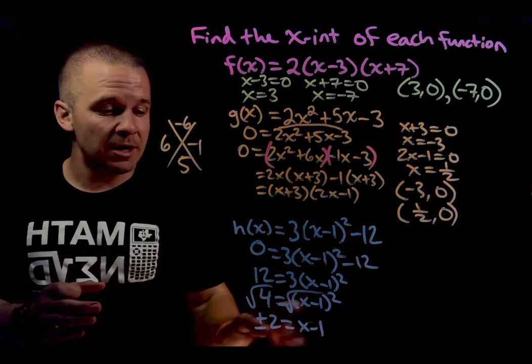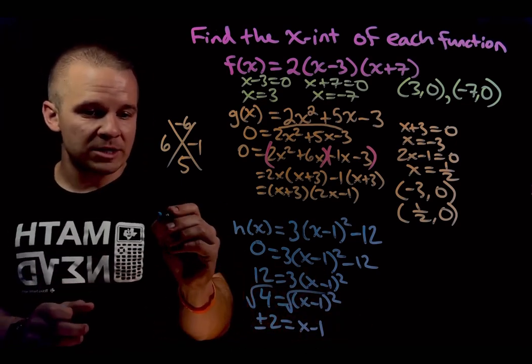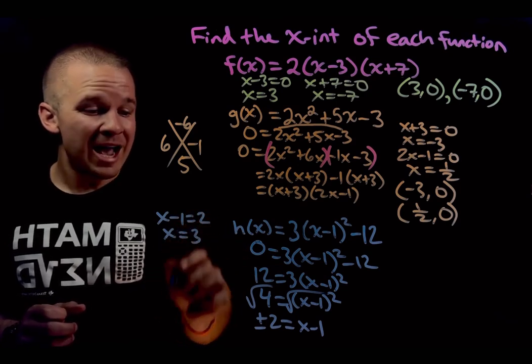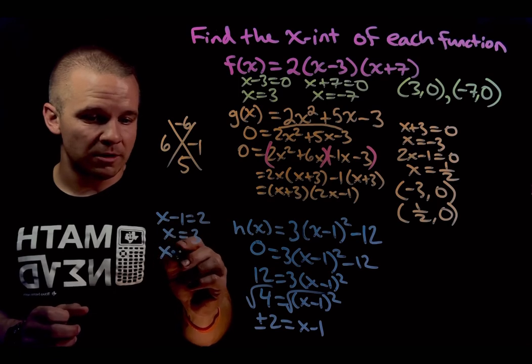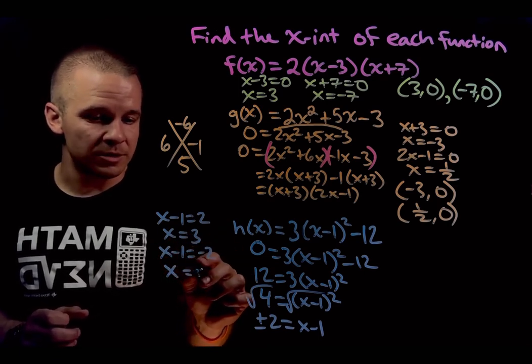With this, I'm going to set up two separate equations. And I'm going to work over here a little bit. We got x minus one equals two, so I'll get x equals three. And I'm going to have x minus one equals negative two. So when I add one, I get x equals negative one.